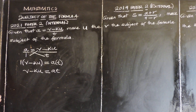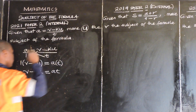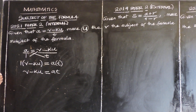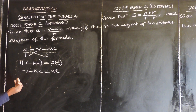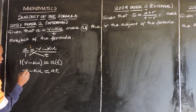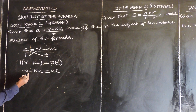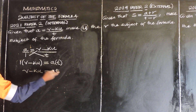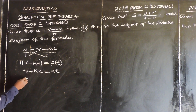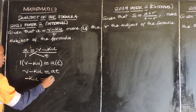Now we are making U the subject of the formula. We are going to group the like terms. Whichever term does not consist of U should be moved to the other side. V is not a U term, so we take it to the other side, making it negative. So: negative KU is equal to AT minus V.